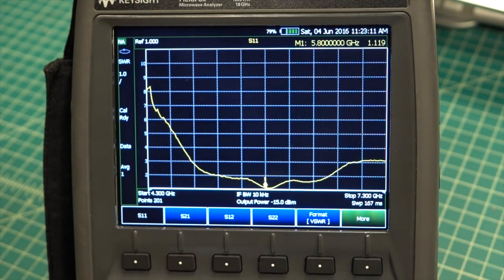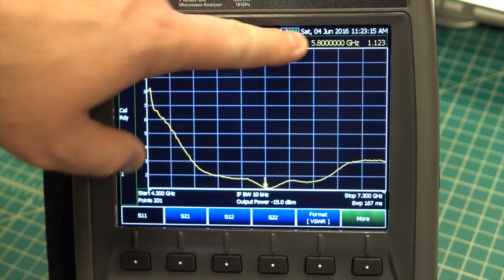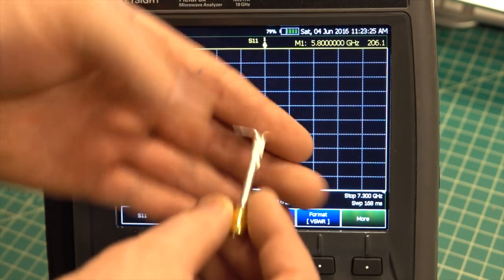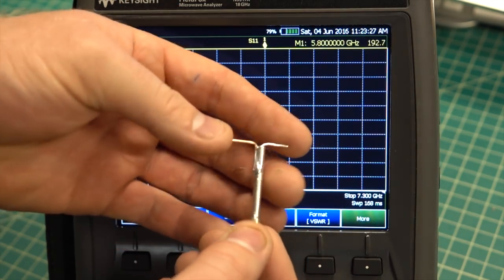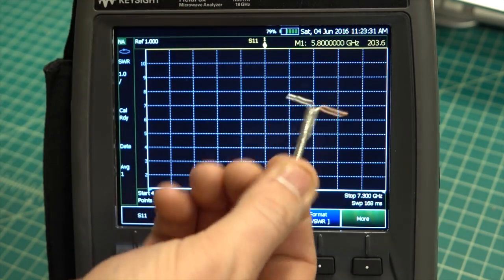So you see at 5.8 GHz this antenna has an SWR of about 1.1 which is a pretty good match. The problem with a dipole center fed with a coax cable is that we end up with coupling from the antenna to the feed line that negatively affects our radiation pattern.